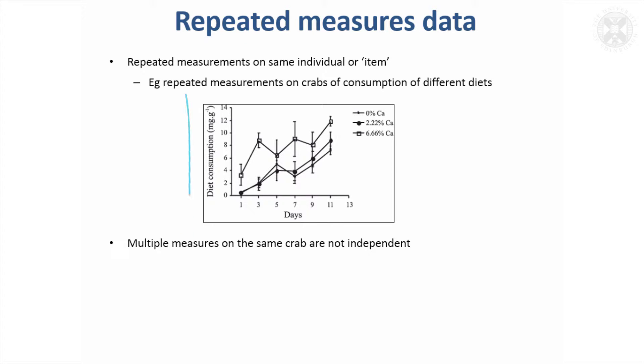This is actually some measurements taken on crabs. They had different diets and these are the mean values after different time points. The person plotting this graph put in standard errors. This constitutes repeated measures data because the data are taken on the same crab several times and they can't be considered to be independent.